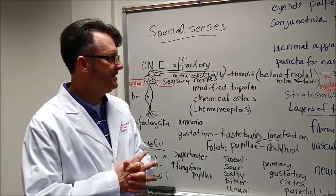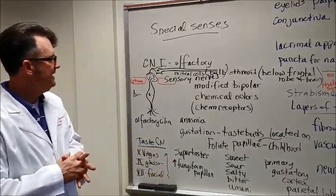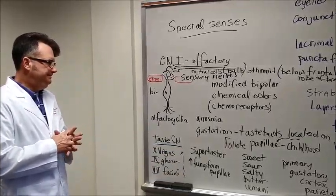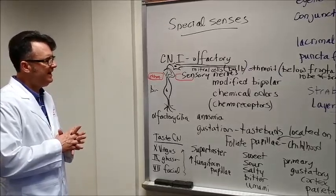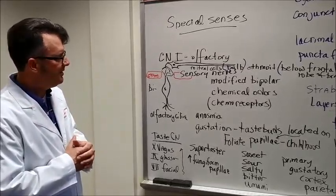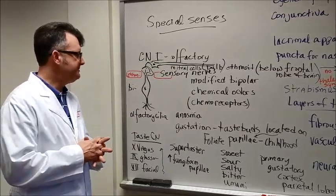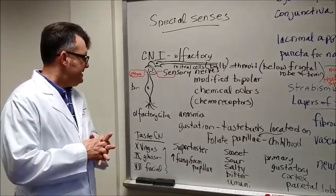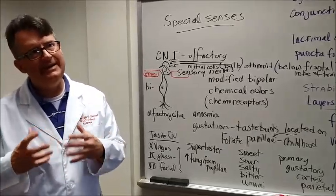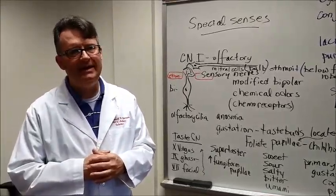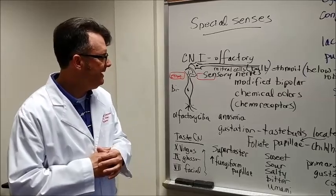Interestingly enough, I learned that there is no thalamic synapse of the sense of smell as the sense of smell moves to the cortex area. Interesting. The chemical receptors that pick up smell or odors are called chemoreceptors. The inability to smell is called anosmia.